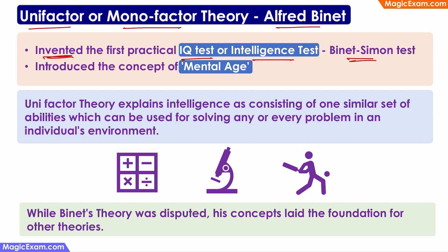He also introduced the concept of mental age. That is, a child who is chronologically 7 years old — if that child is displaying mental abilities that are expected from a 10 year old, then the mental age of the child is supposed to be 10 years.